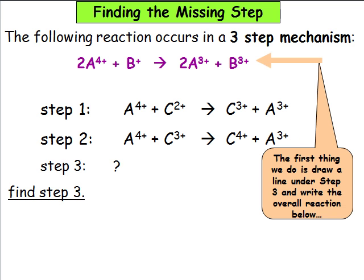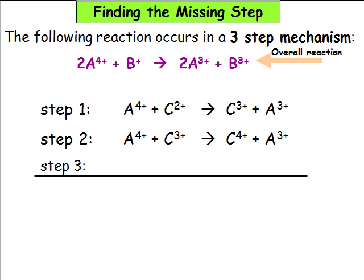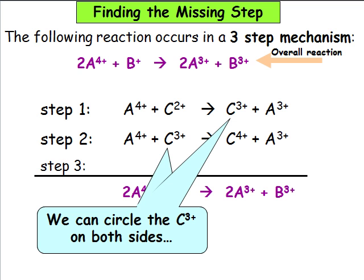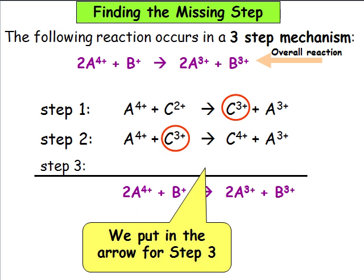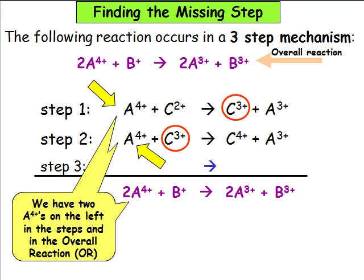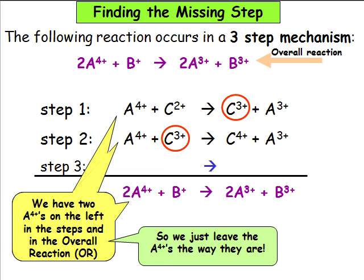The first thing we do is draw a line under step 3 and write the overall reaction below. You can see we just copied the overall reaction from above, as was given in the question. We can circle C3+ on both sides and put an arrow in for step 3. We have two A4+ on the left in the steps and in the overall reaction, so we just leave A4+ the way they are.